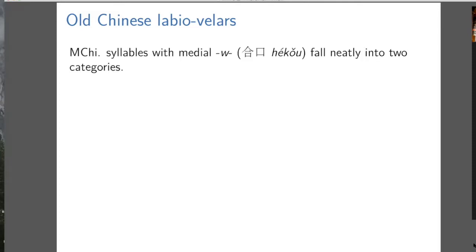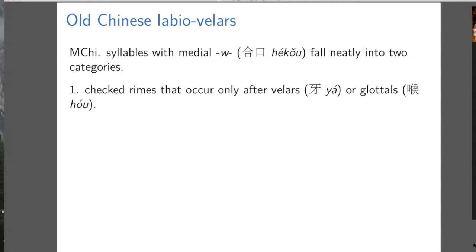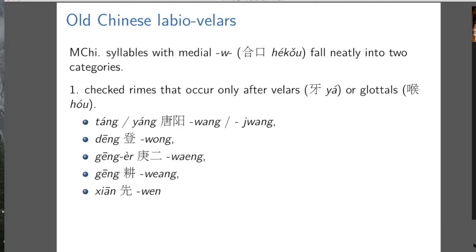Now onto labiovelars. If we look at the distribution of medial W in Middle Chinese, it falls neatly into two categories. The first is checked rhymes that occur only after velars or glottals — and I'm giving the name of the rhyming pinion followed by the characters, followed by how the rhyme is represented in Baxter's transcription.